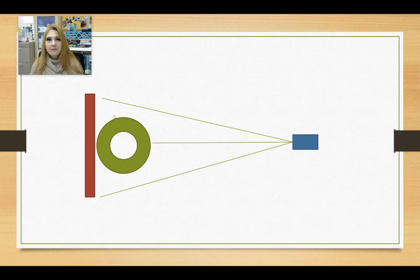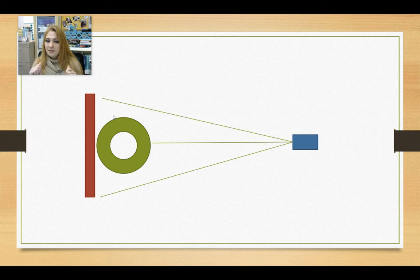You may have had this happen. Maybe you're working with another technologist and you have your patient in a lateral chest x-ray position and it is a true lateral. And the person you're working with comes in, tweaks it, rotates them ever so slightly forward, and the result is a beautiful image. Why did they do that? It's all about beam divergence.